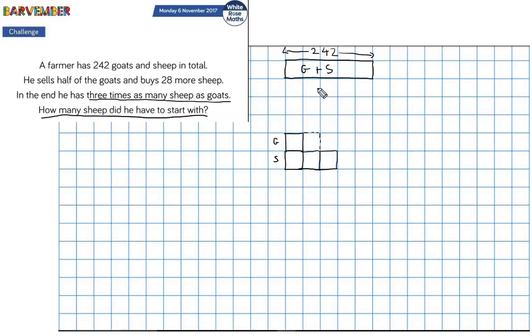Okay. I'm now getting somewhere. So he sold half of the goats, so he got rid of that, but he bought 28 more sheep.